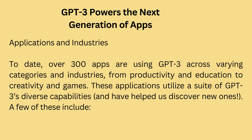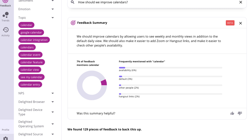GPT-3 powers the next generation of apps, applications and industries. To date, over 300 apps are using GPT-3 across varying categories and industries, from productivity and education to creativity and games. These applications utilize a suite of GPT-3's diverse capabilities and have helped us discover new ones. A few of these include: Viable helps companies better understand their customers by using GPT-3 to provide useful insights from customer feedback and easy-to-understand summaries. Using GPT-3, Viable identifies themes, emotions and sentiment from surveys, help desk tickets, live chat logs, reviews and more. It then pulls insights from this aggregated feedback and provides a summary in seconds.